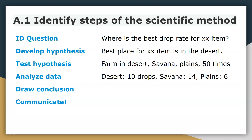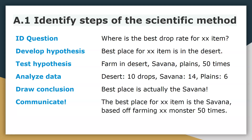Based off this information, you would conclude that the savannah seems to have a higher drop rate, so the best place is potentially the savannah for whatever item it was. When you communicate with people, you would say the best place for that item is the savannah, based on farming that monster 50 times in each location.